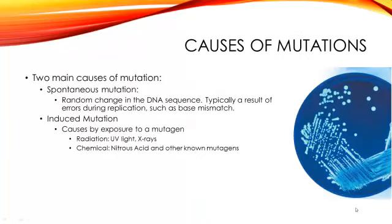There are two types of mutations: spontaneous and induced. Spontaneous are those that occur randomly as a part of the DNA replication process. Induced mutations are caused by mutagens such as UV light or nitrous acid. Either way these mutations arise, they can have a variety of effects depending on the type, which we will address next.